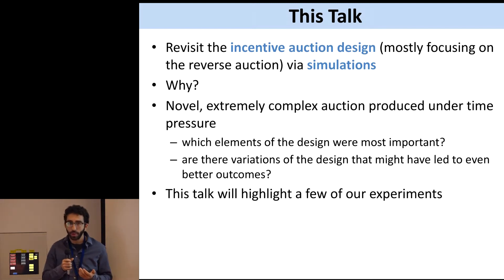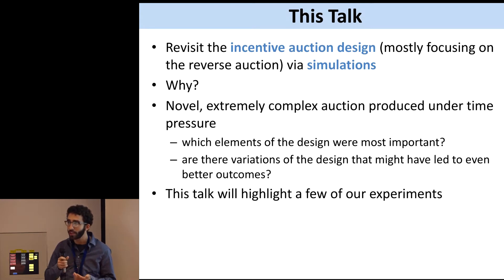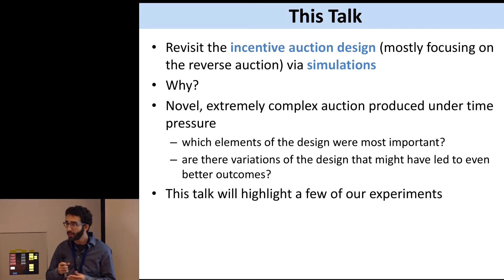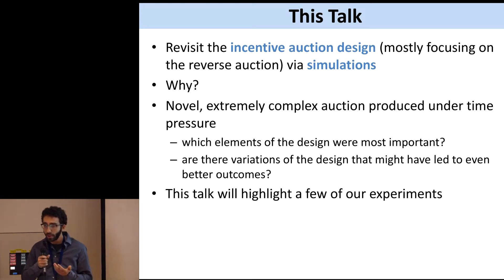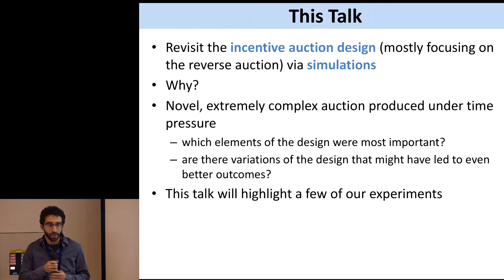In this talk, I'm going to be revisiting the incentive auction design, mostly focusing on the reverse auction, via simulations. You might ask why. The reason we're talking about an auction that happened about two years ago is that this was a novel, extremely complex auction produced under a lot of time pressure. It's important to understand what elements were most important, and whether there were variations of the design that might have led to even better outcomes. So we've done many experiments in this vein, and this talk highlights a few of our examples.